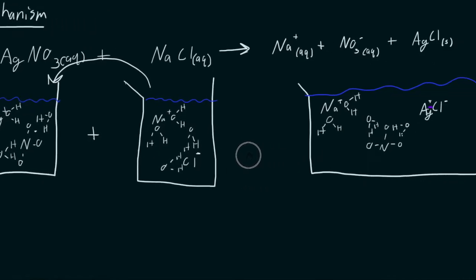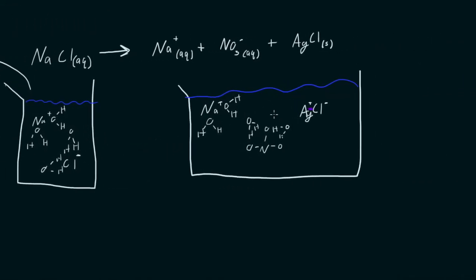But once you mix them together, this really milky white solid starts to form. And at first it does look like milk, but then if you give it a little while, then this solid stuff settles at the bottom. And that solid stuff is the silver chloride, because now it's in bigger chunks and it's going to settle to the bottom of the container.